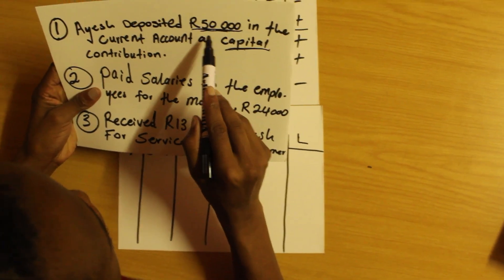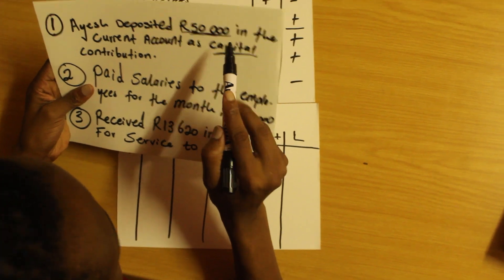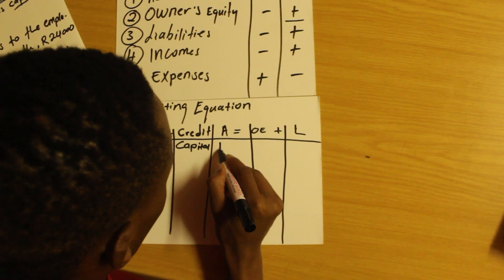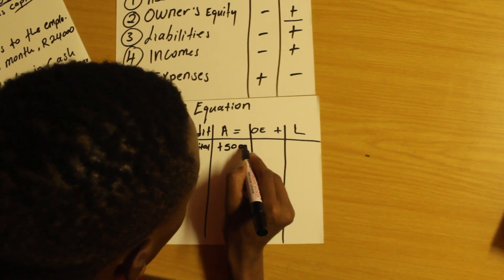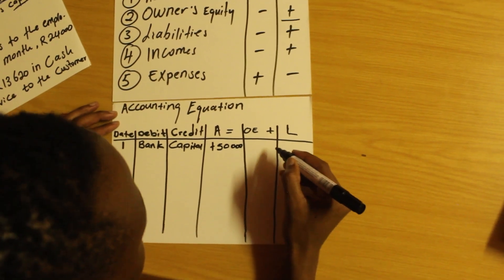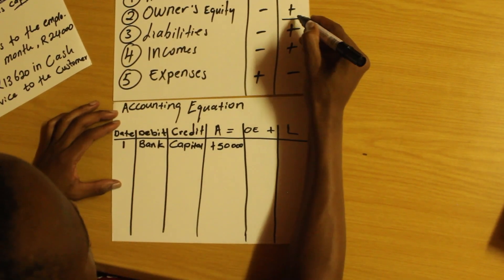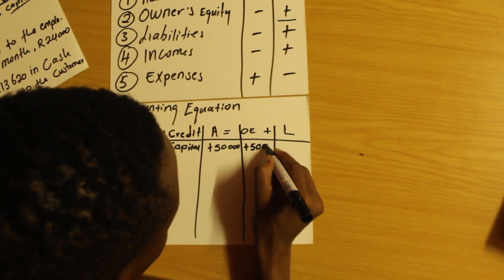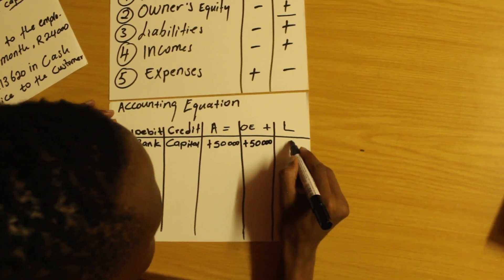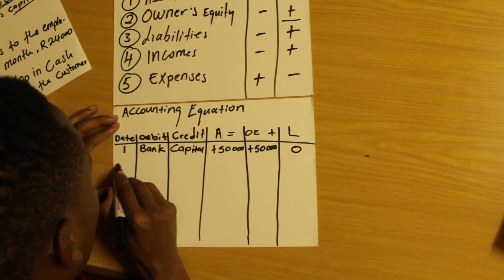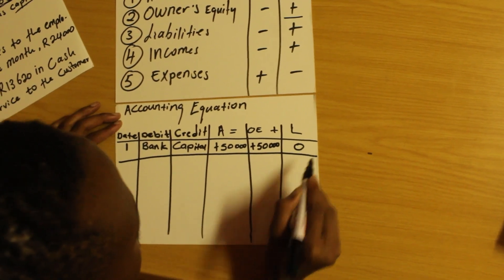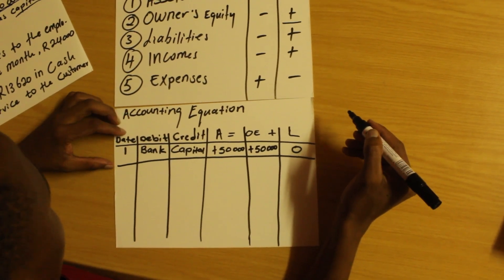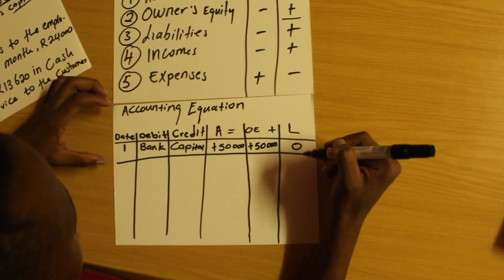The owner contributed 50,000. Bank is an asset, so I'll go to the asset side and say plus 50,000. Then owner's equity is also increasing, so I'll say plus 50,000. I do not have any liabilities here, so I'll put zero. That is how we record a cash capital contribution transaction.